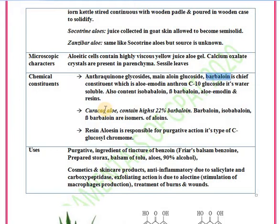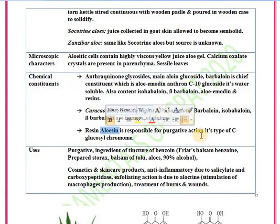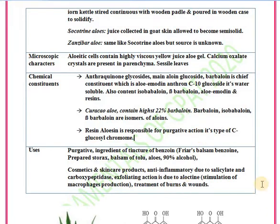The highest amount of barbaloin is present in Curacao aloe, which is the variety with the highest amount of barbaloin, the principal constituent of the glycoside aloin. Aloe also contains a resin called aloesin, which is responsible for its purgative action and is a C-type of glucosylchromone.